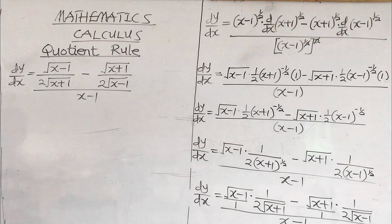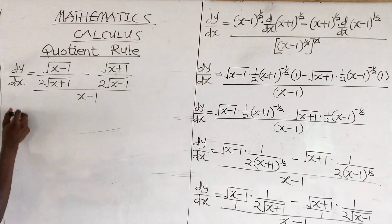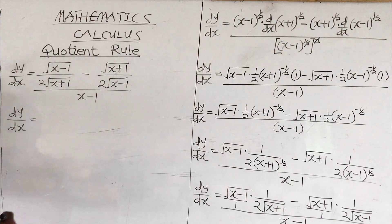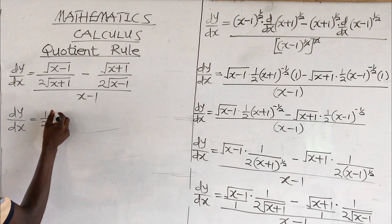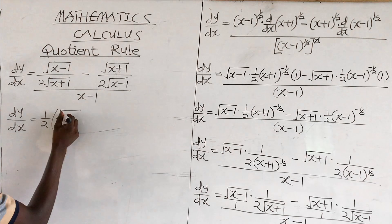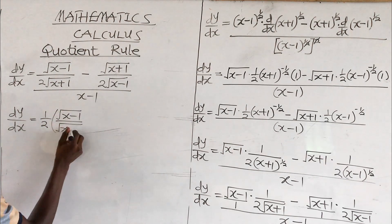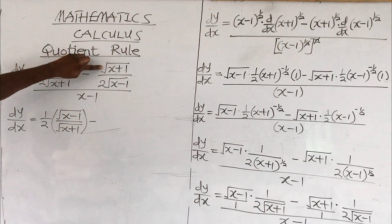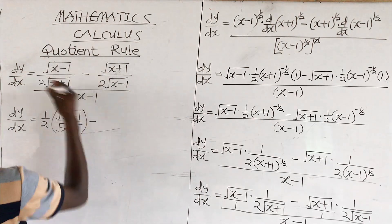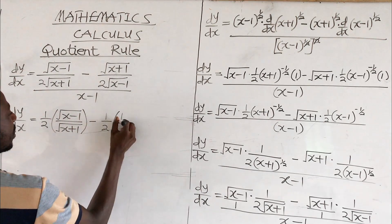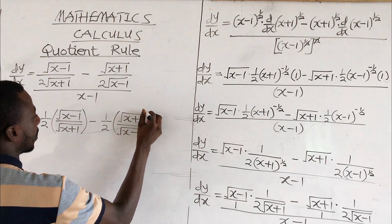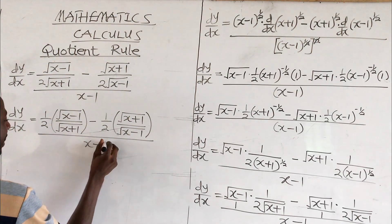Now dy over dx: we have 1 here but we don't write it, so I can pull out one half. I have one half multiplying root of (x minus 1) times root of (x minus 1) over root of (x plus 1), minus one half multiplying root of (x plus 1) over root of (x minus 1), all over x minus 1.